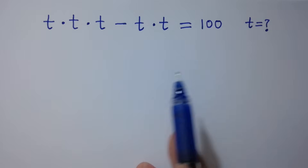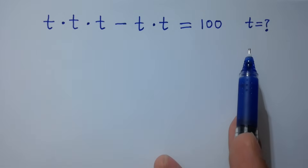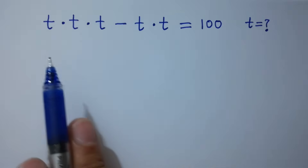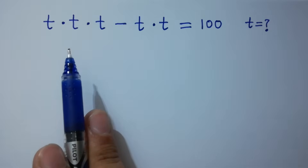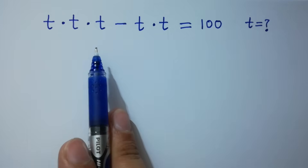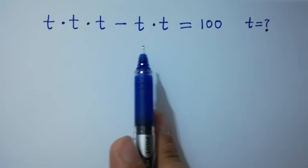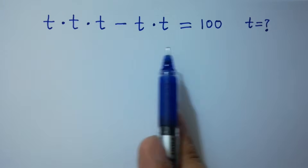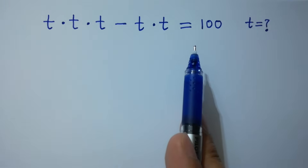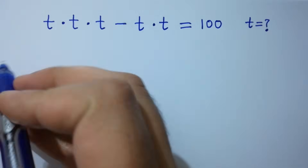Hello friends. Find the value of t if t times t times t minus t times t equals 100. Let's have a solution.